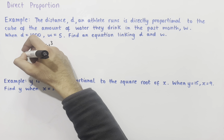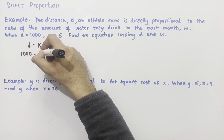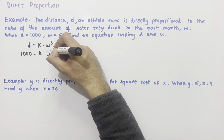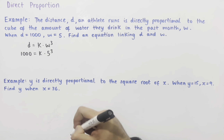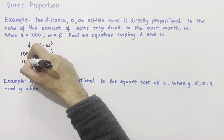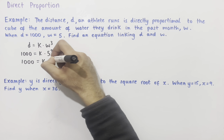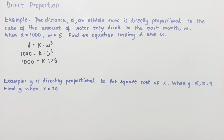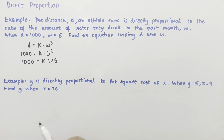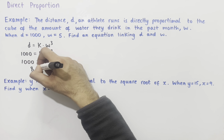Putting this in, we get 1000 equals k multiplied by 5 cubed. 5 cubed is equal to 125, so we can write this as 1000 equals k times 125. Dividing both sides by 125 gives us k equals 8.